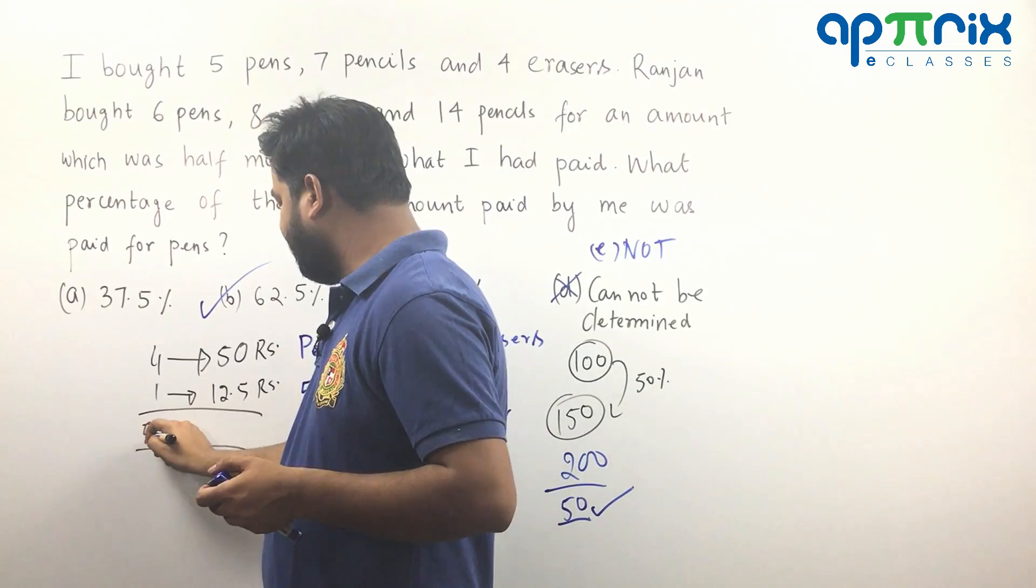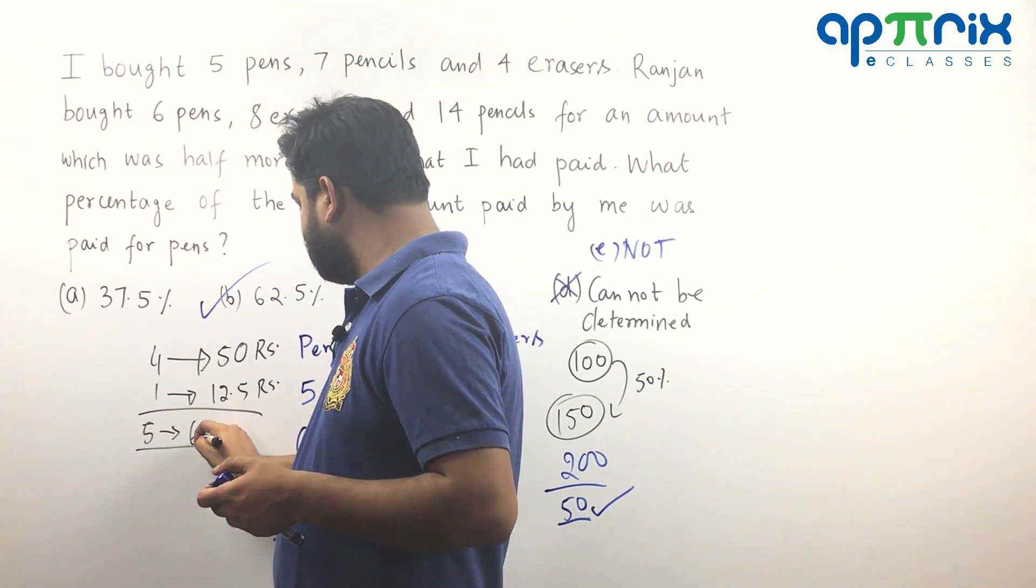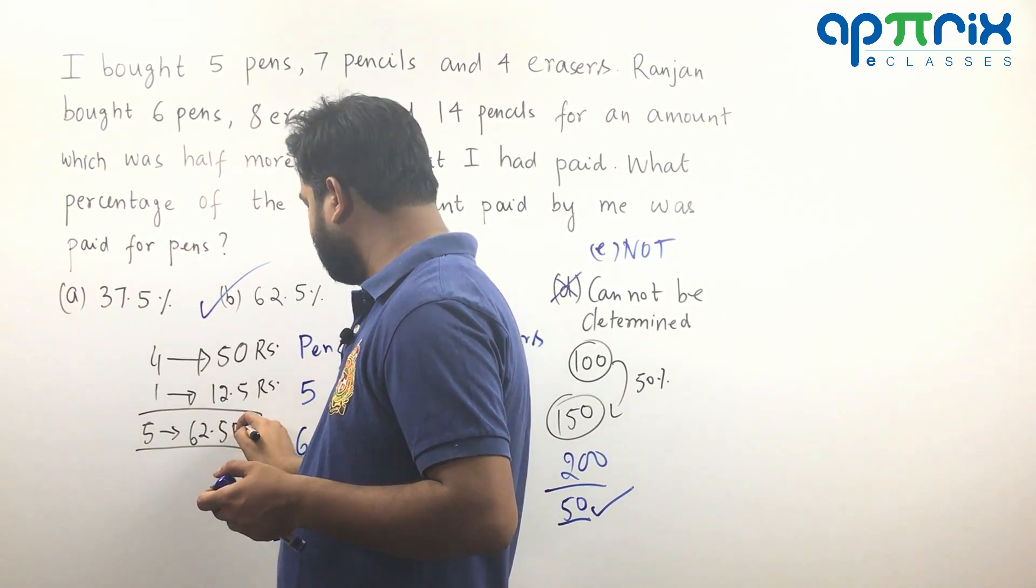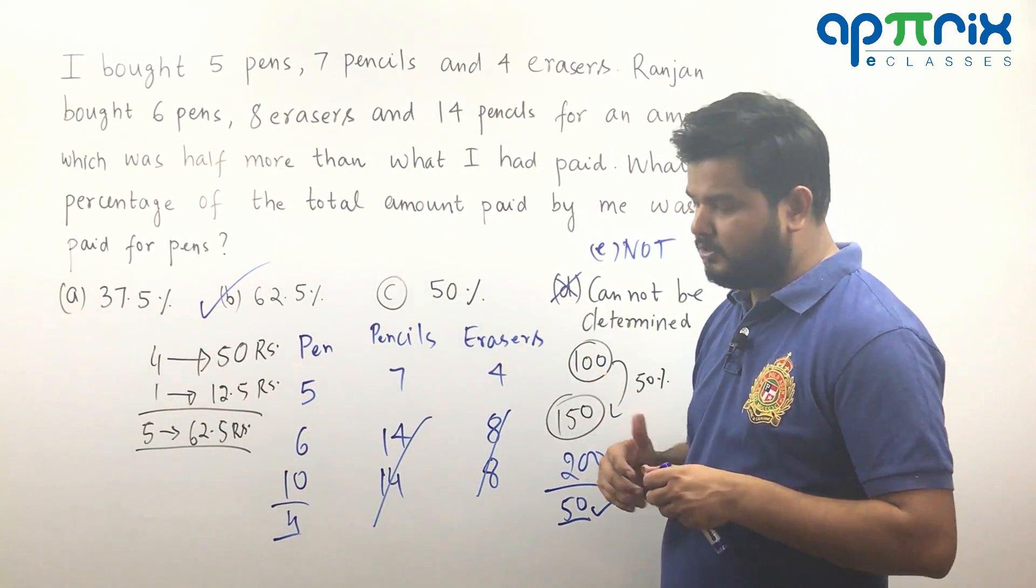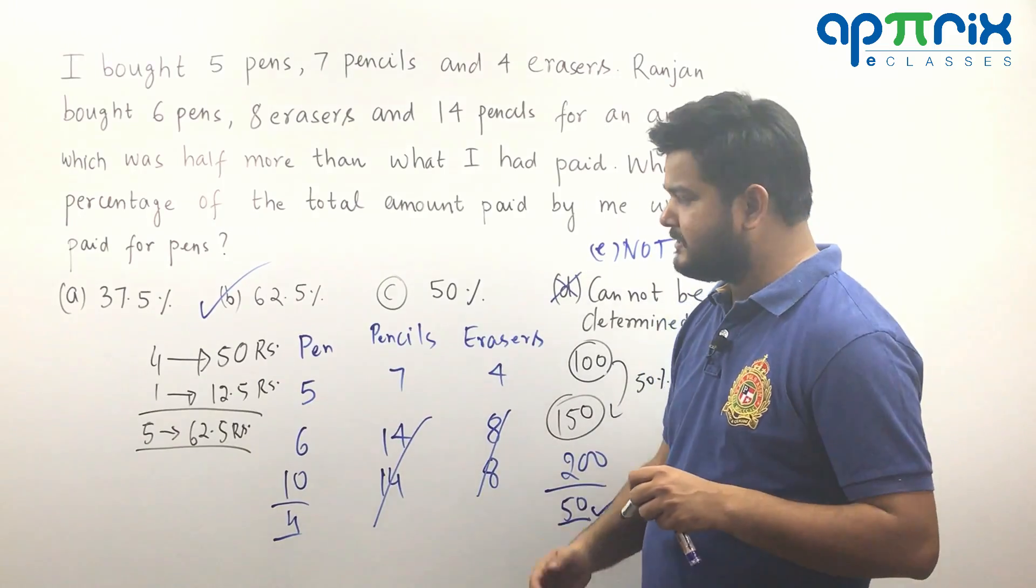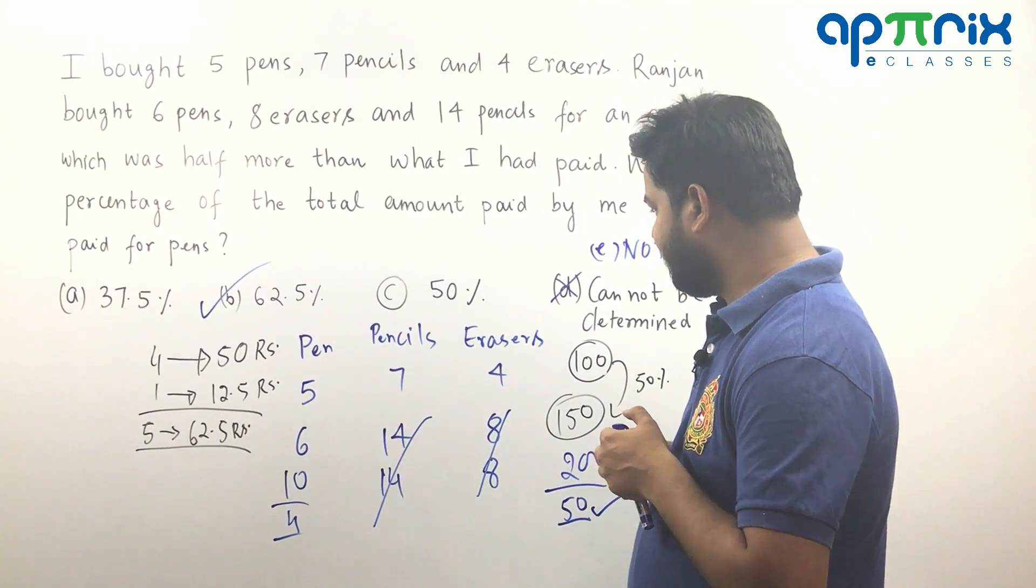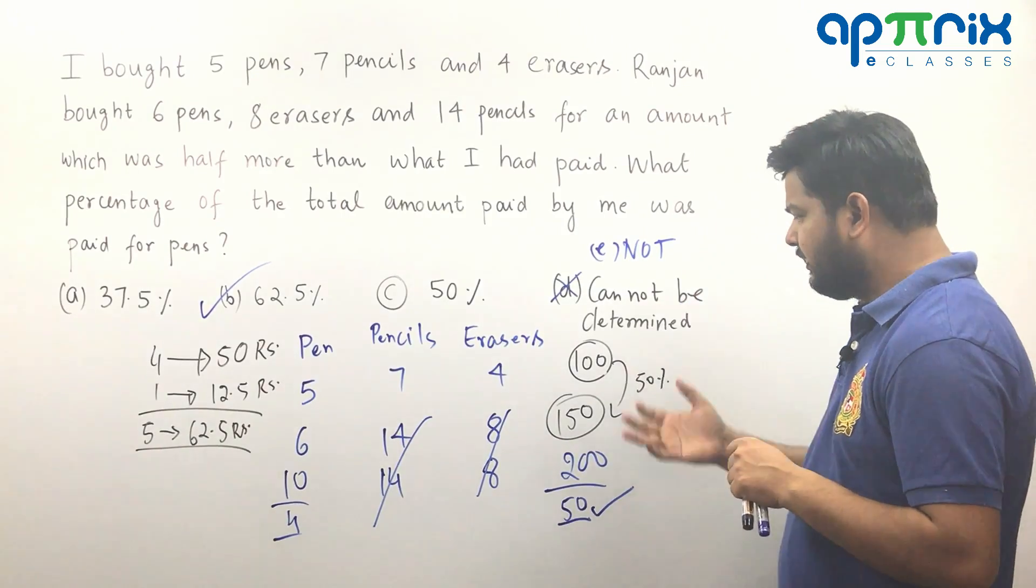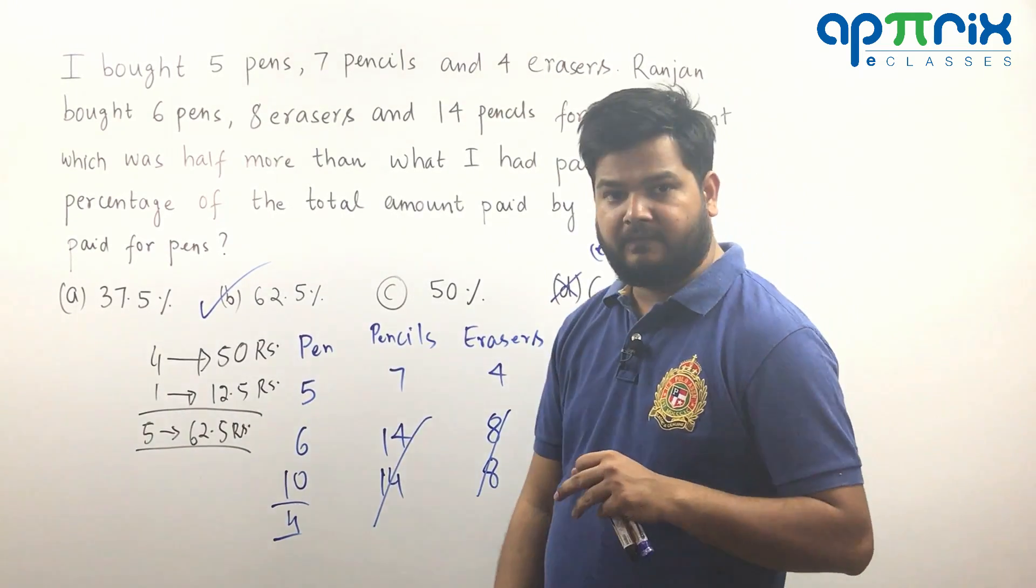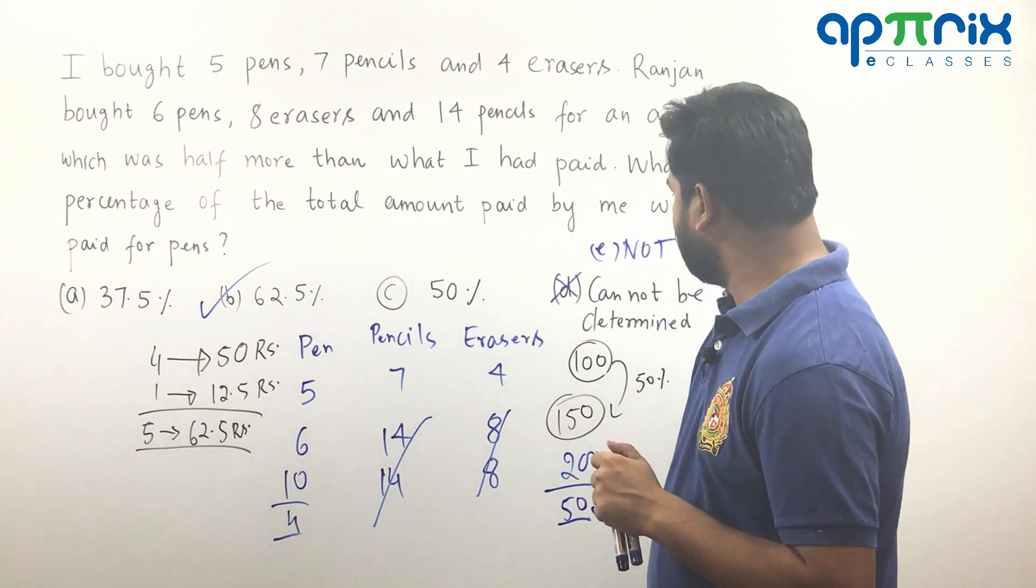So you can sum total now and you will find that 5 pens will be costing 62.5 rupees. And 62.5 out of 100, because I assumed initial amount spent by me to be 100, I can easily mark the answer to be 62.5 without any problem. And that's how you can solve these questions in a really easy way. And that's how you can easily get the answer without any problem.